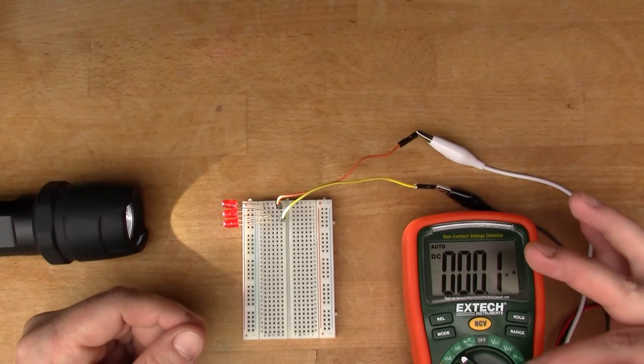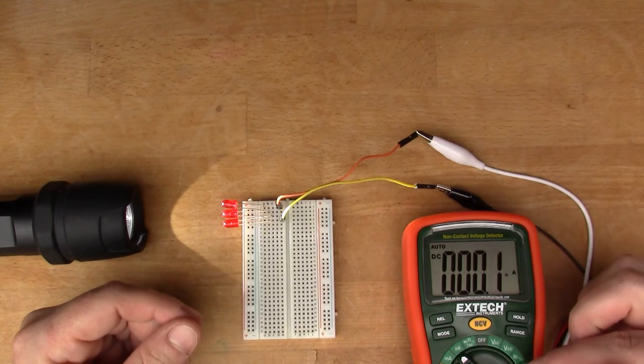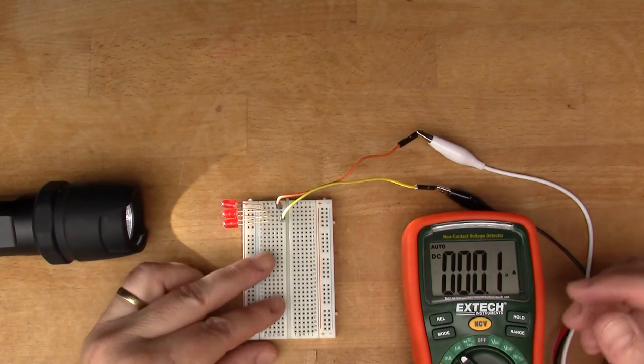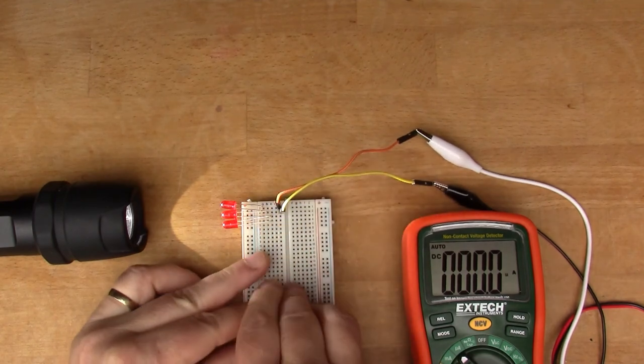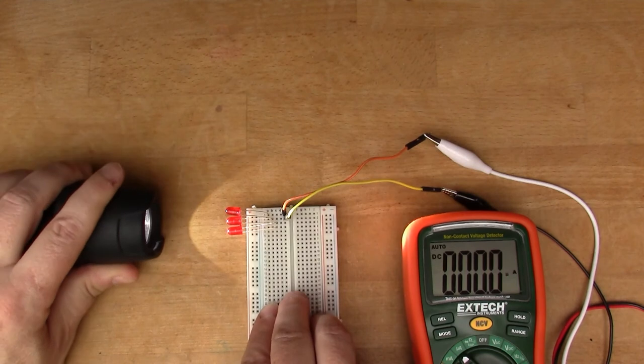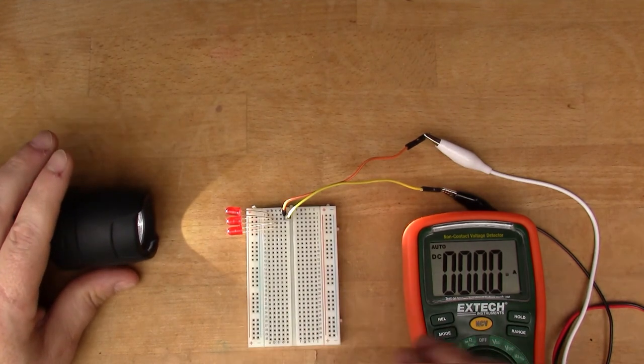So the Extech meter is now set up in its microamps mode, so we're going to read microamps. Let's start with one LED and see if we get the best lighting on the LEDs there.